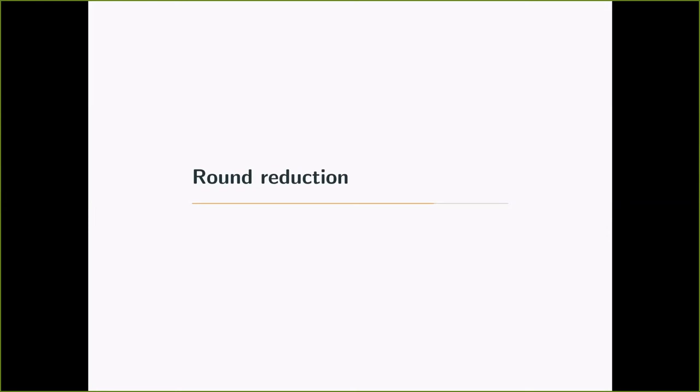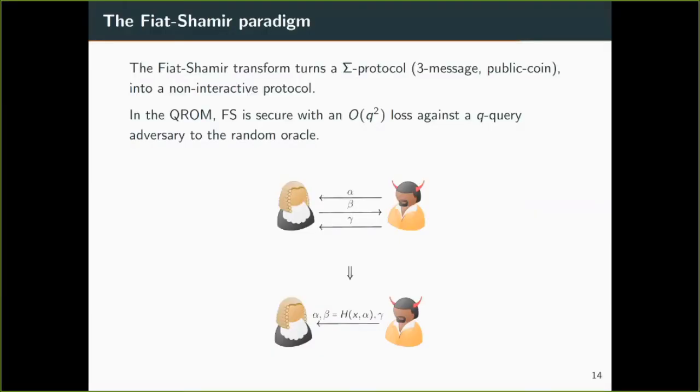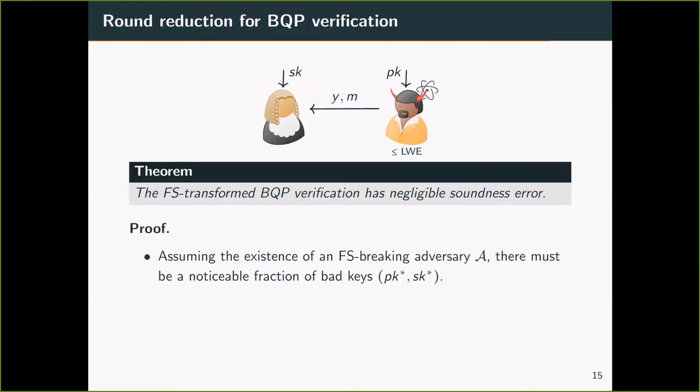Now we are ready to apply the round reduction technique called Fiat-Shamir to turn a protocol into a non-interactive one. The Fiat-Shamir transform turns a Sigma protocol, which means it's a three-message public coin protocol, into a non-interactive one. The idea is as follows. Because the challenge message is a random coin, instead of having the verifier toss it, the prover gets a coin by hashing the instance and the first part of the message. Because the verifier can check whether this is a correct hash, the prover is unable to pick a random coin that he knows how to win.